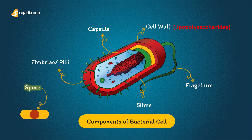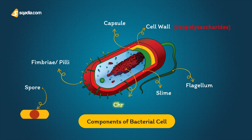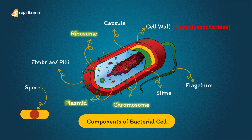Spores are metabolically inert bacterial forms adapted for long-term survival in the environment, which are able to regrow under suitable conditions. Bacteria have a single chromosome and lack a nucleus, because they are prokaryotes. The DNA is coiled and supercoiled by the DNA gyrase enzyme system. Bacterial ribosomes differ from eukaryotic ones, making them a target for antibacterial therapy. Bacteria also contain accessory DNA in the form of plasmids, integrons, transposons, and bacteriophages, which may transmit antimicrobial resistance and may also code for pathogenicity factors.